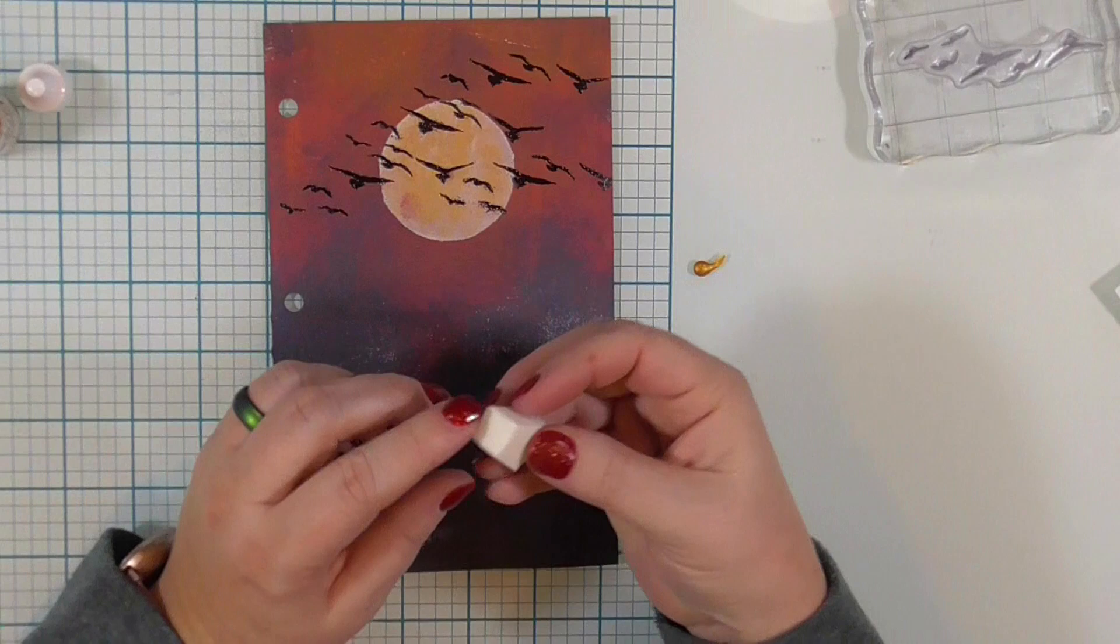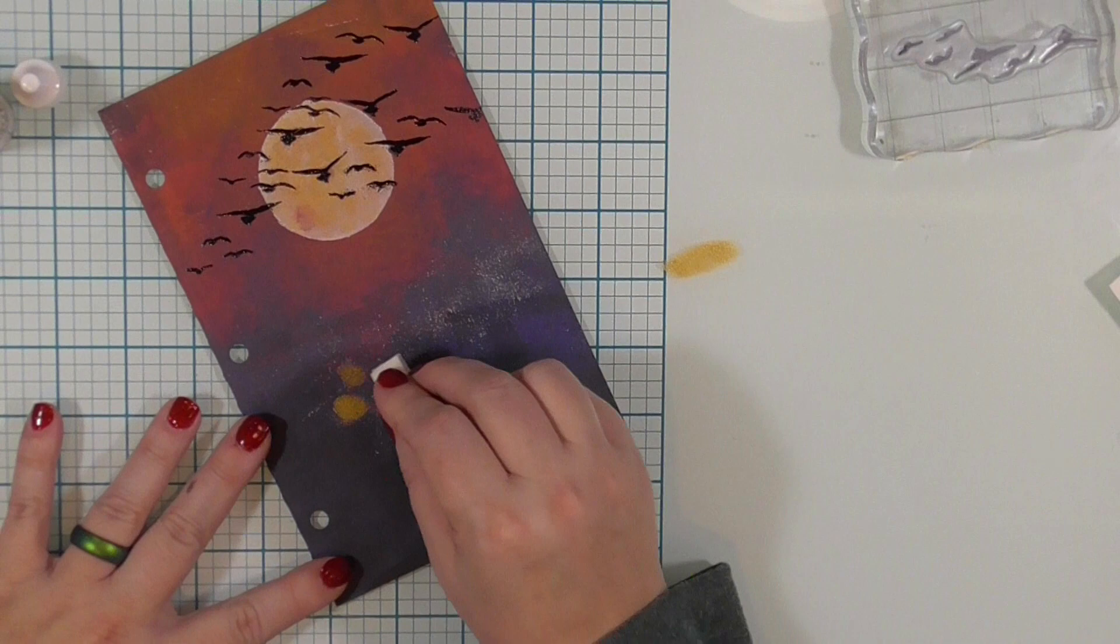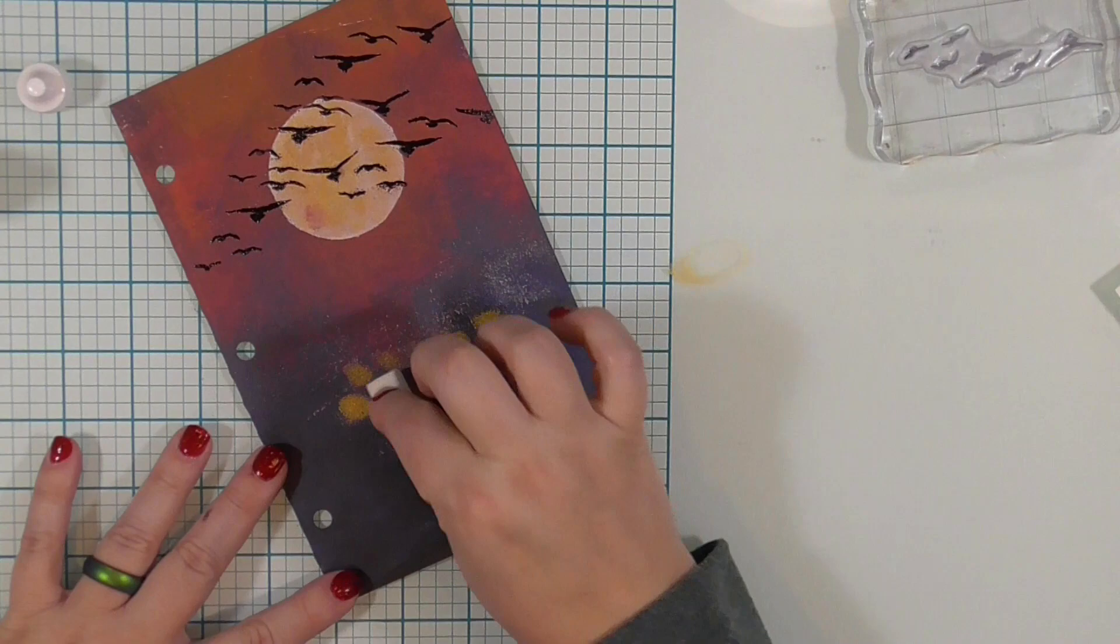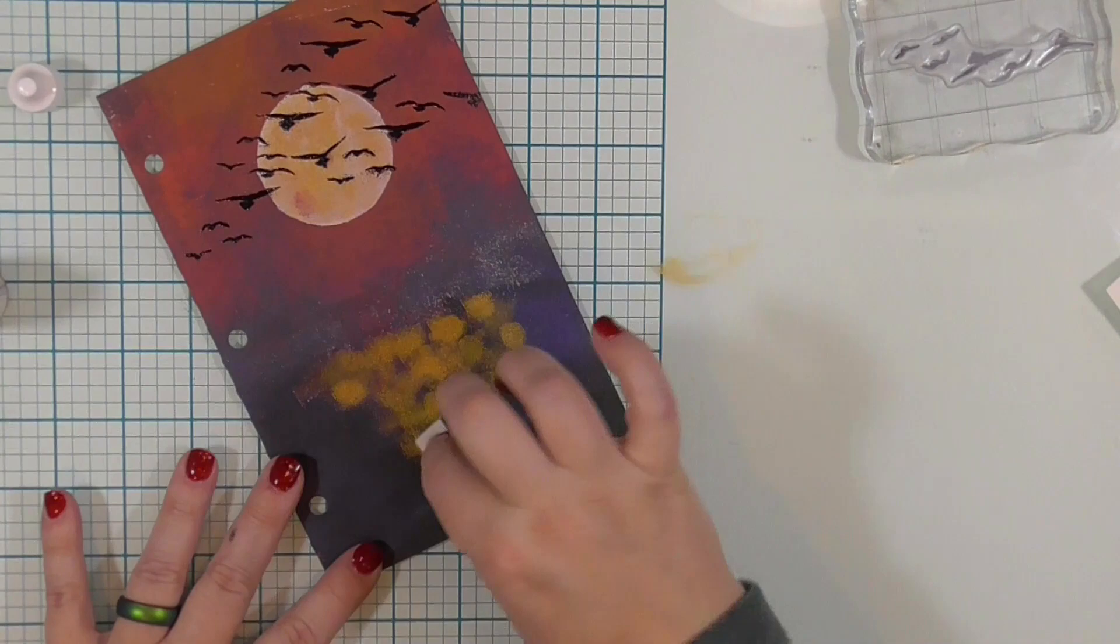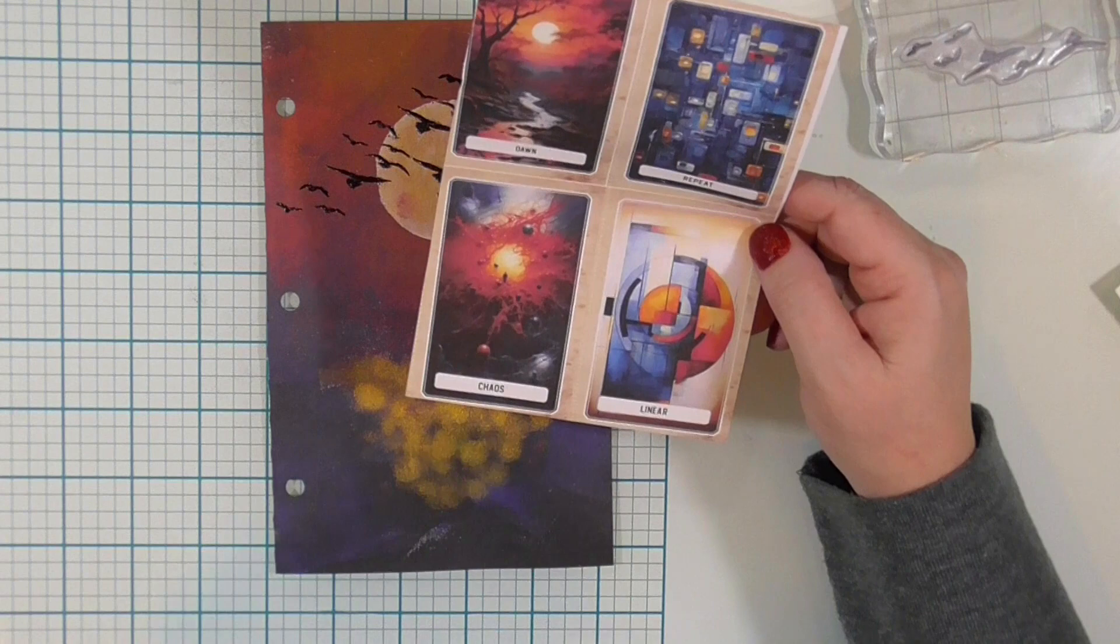Now for the second part of repeat, I am going to add a reflection of the sun. Another part of the repeat of this is to add the reflection of the sun down along the bottom or the ground of this image by using a square makeup sponge. And it's just little squares of repeat. So I have dawn, I have repeat. And the next week, week three was chaos.